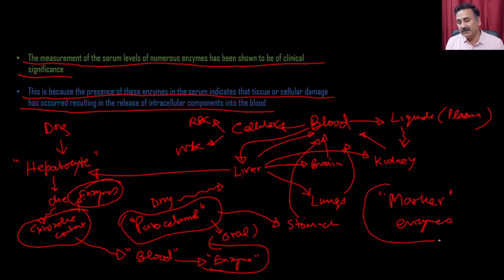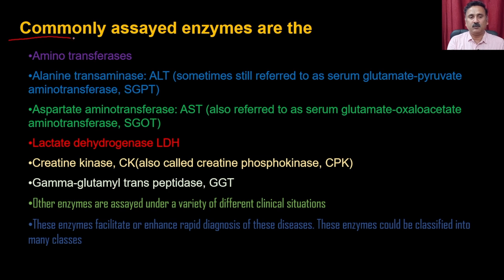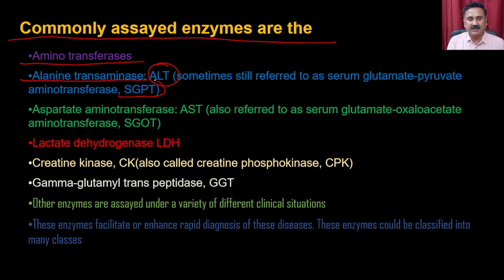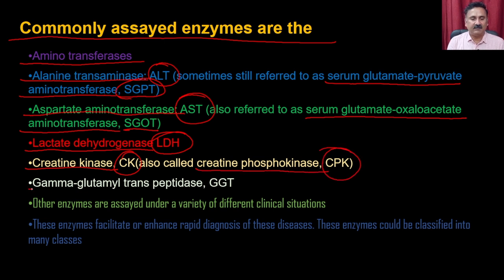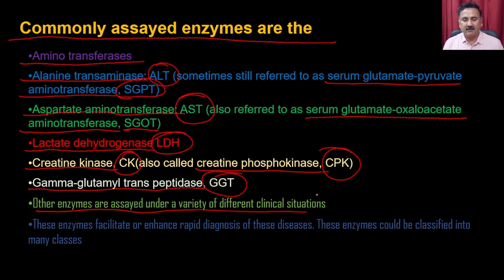This is the basic idea of how you can detect the serum level of an enzyme, which indirectly tells you that there is a problem to that particular organ, because all the organs have their specific enzyme. All these enzymes are called marker enzymes — they will not be present, or not present in high quantity, in other cells. You can use aminotransferases, alanine transferase or ALT (also called SGPT), aspartate aminotransferase or AST (also called SGOT), lactate dehydrogenase or LDH, creatinine kinase or CK/CPK, and gamma glutamyl transpeptidase or GGT.